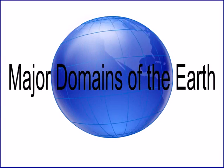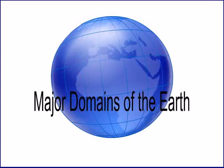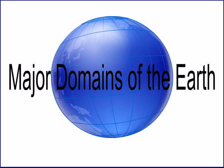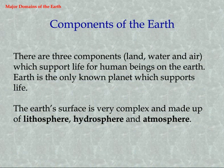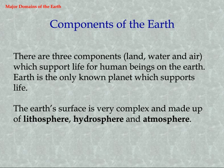Major Domains of the Earth. Components of the Earth: there are three components — land, water, and air — which support life for human beings on the Earth. Earth is the only known planet which supports life. The Earth's surface is very complex and made up of lithosphere, hydrosphere, and atmosphere.